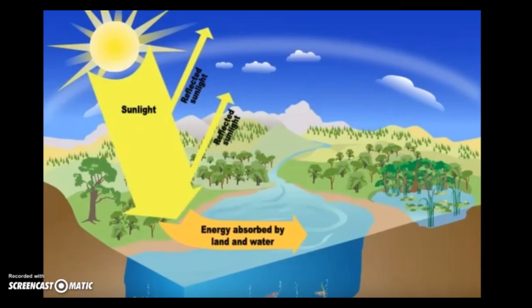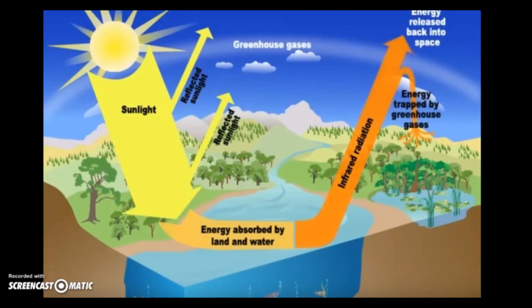The Earth's surface warms up, then gives off energy in a different form called infrared radiation. This energy travels back towards outer space. Greenhouse gases trap some of this energy in the atmosphere before it can escape, making the Earth warmer.